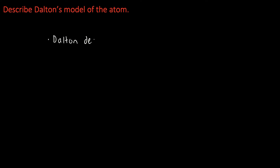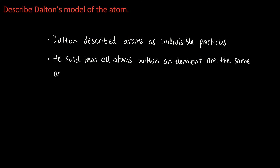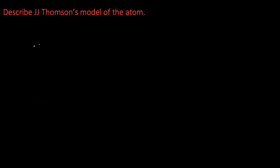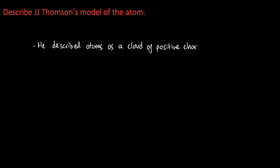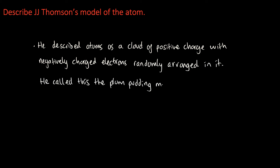Dalton described atoms as indivisible particles. He said that all atoms within an element are the same, and that different elements are made up of different atoms. Thomson described atoms as a cloud of positive charge with negatively charged electrons randomly arranged in it — he called this the plum pudding model.